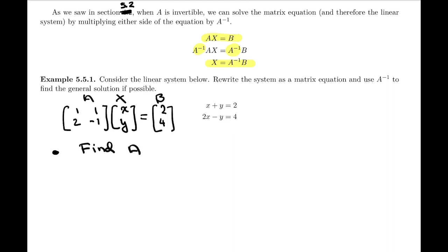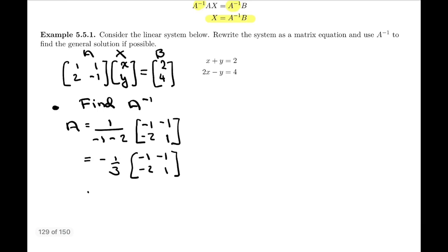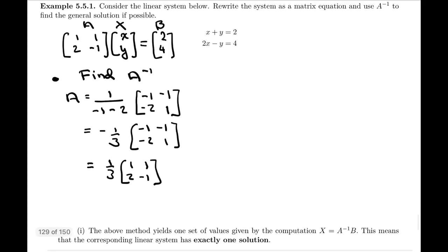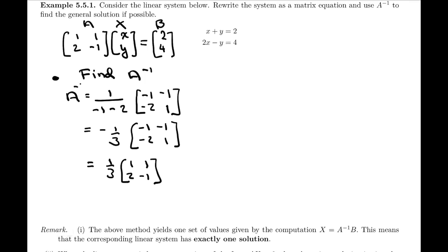Since we're going to need A inverse, let's start with finding it. We know the formula for a 2 by 2: one over (AD minus CB) times the matrix where we interchange the diagonal elements and put minuses in front of the off-diagonal positions. That gives us minus one third times matrix [-1, -1; -2, 1]. I'm not going to multiply in the one third because I want to avoid multiplying fractions. I'll leave A inverse in that form for now.